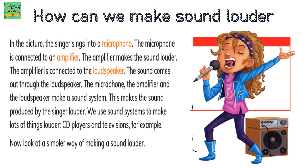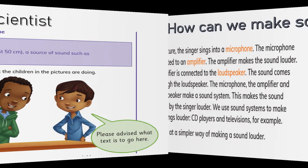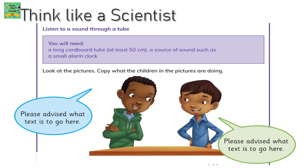Now look at a simpler way of making a sound louder: listening to a sound through a tube. You will need a long cardboard tube which is at least 50 cm long, and a source of sound such as a small alarm clock. Look at the pictures and copy what the children in the pictures are doing.